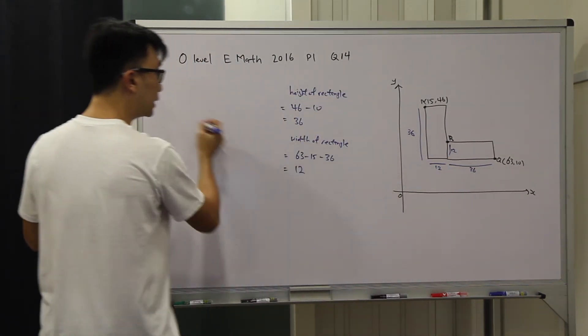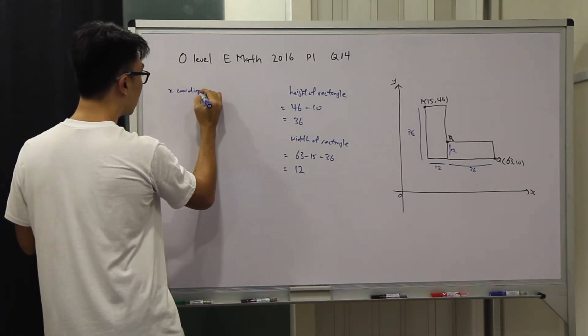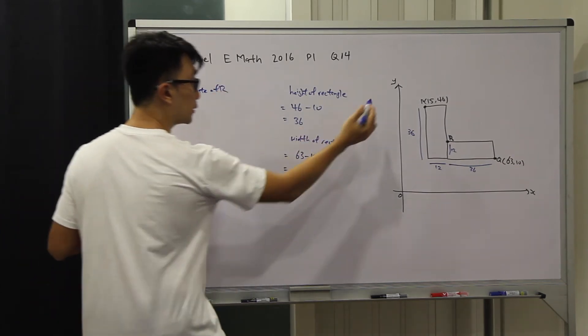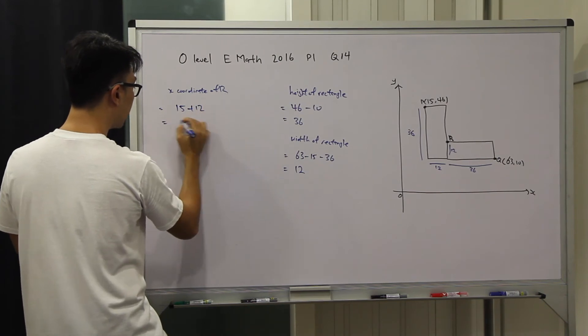So to find the x-coordinate of R, we can use 15 plus 12. That will give us 27.